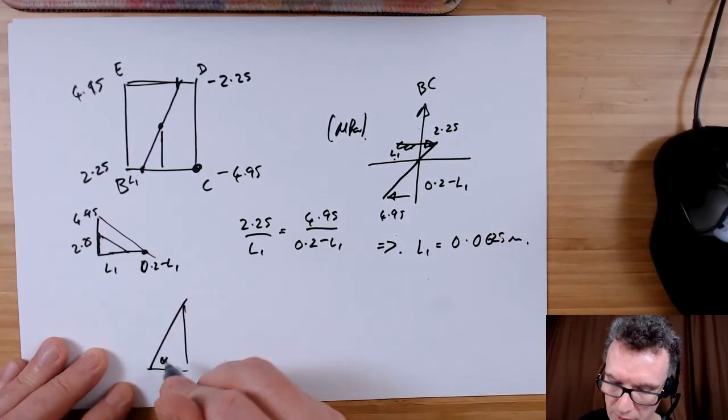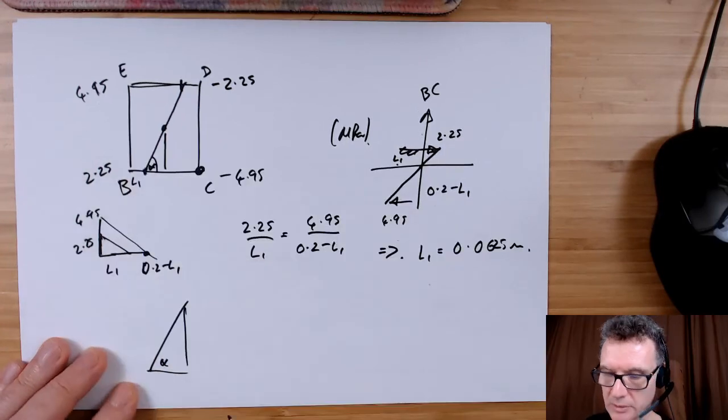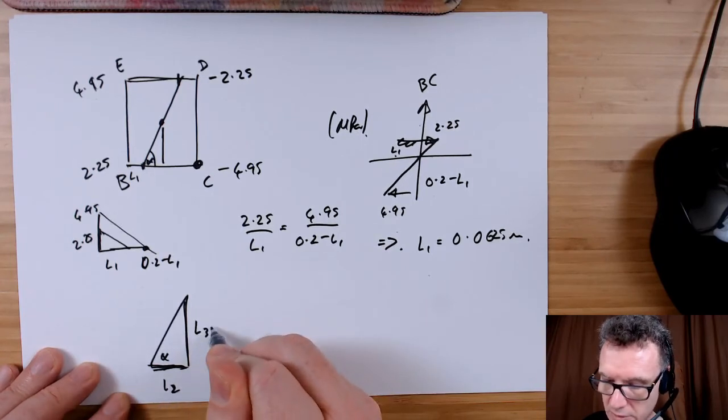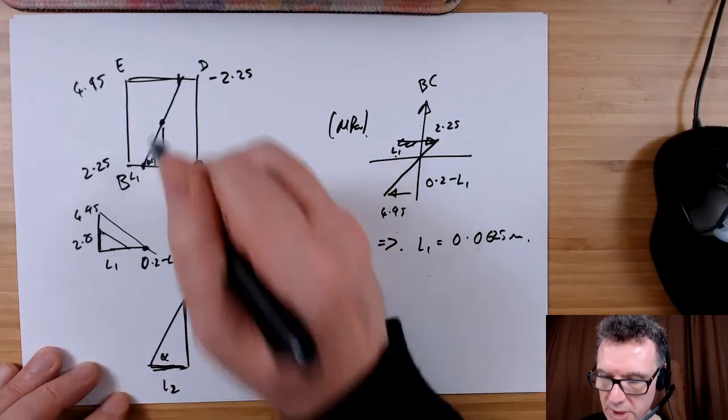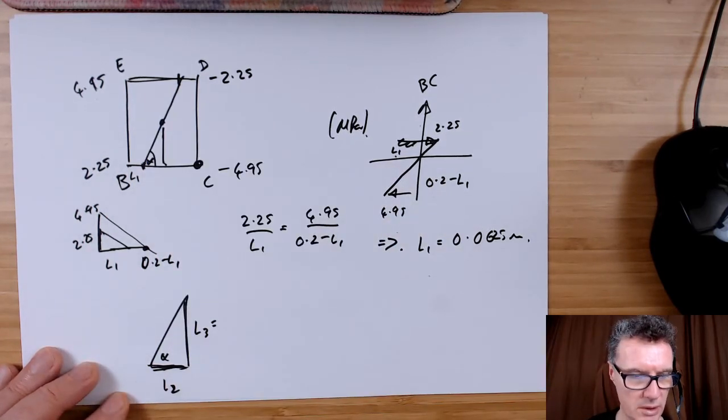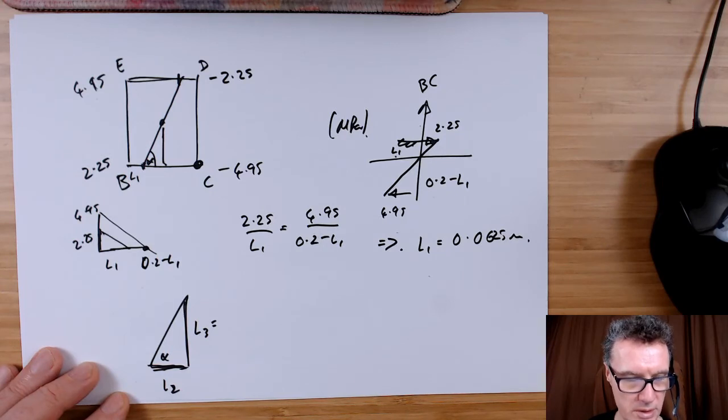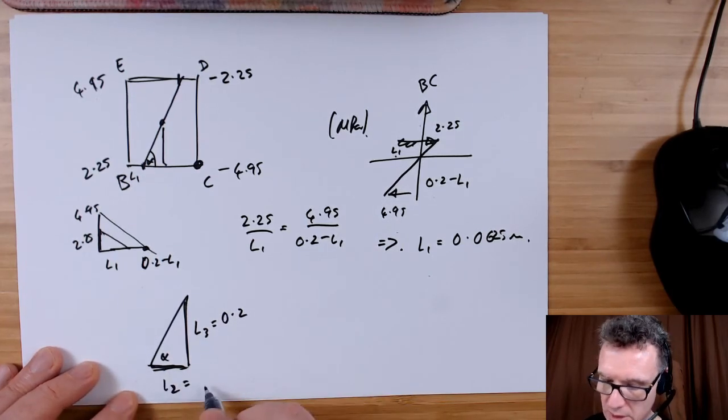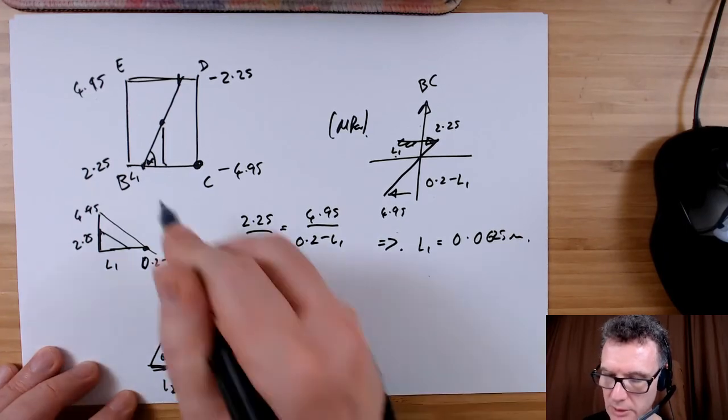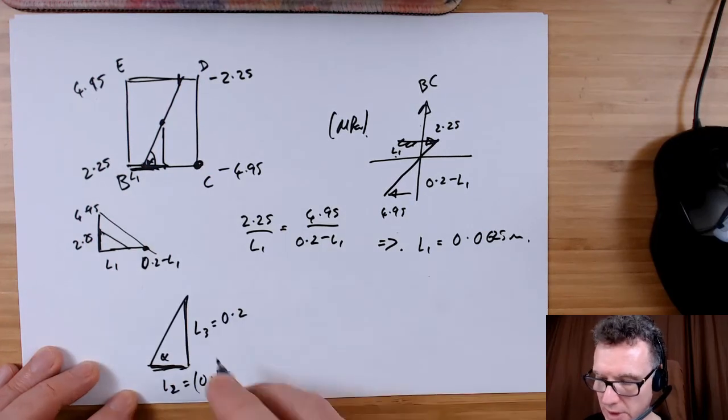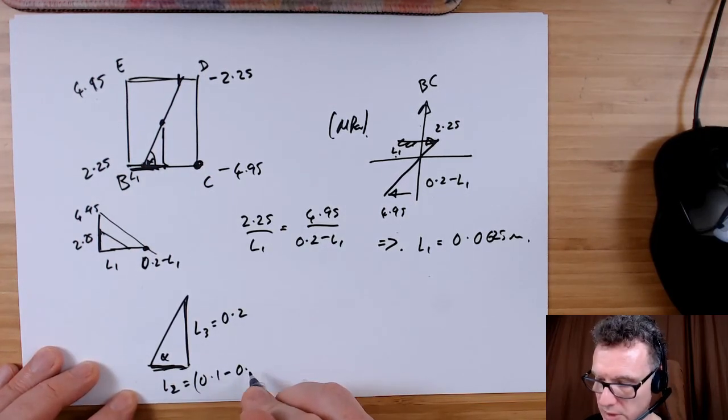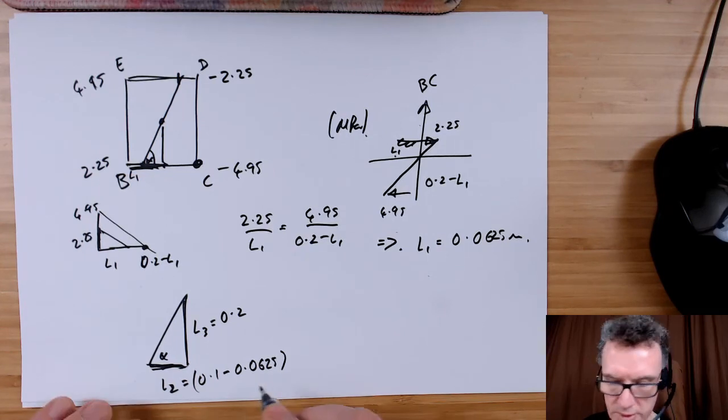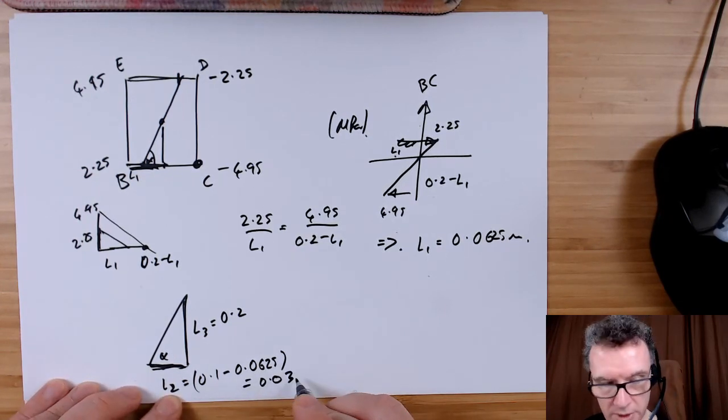Last thing, maybe, is find that angle here. Let's call it alpha. How I would do this is I would find this distance here, L2, and this distance here, L3, which I know. L3 is just the distance from the base to the centroid there. So that distance is 0.2, this distance here is going to be 0.1, so that's going to be here, take away L1. Take away 0.0625, so that's going to be 0.0375.